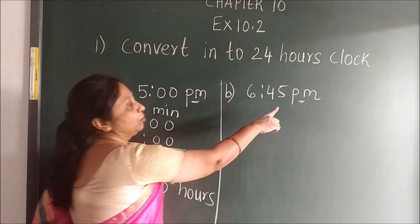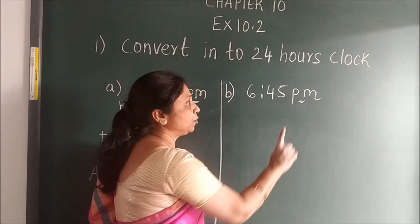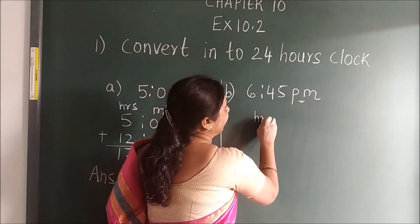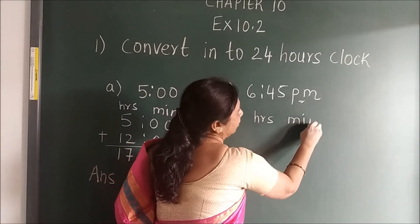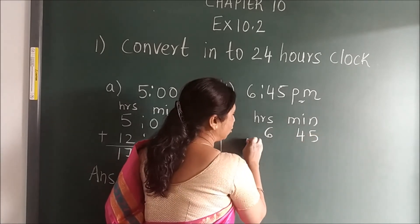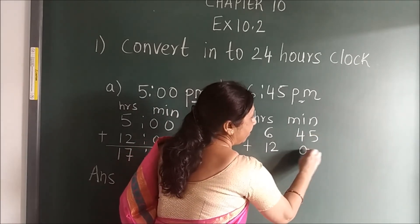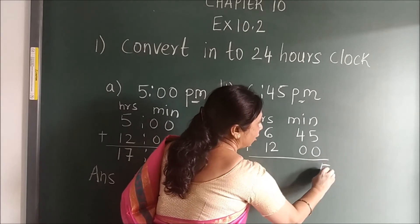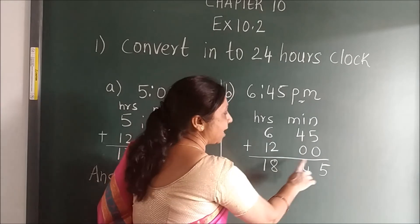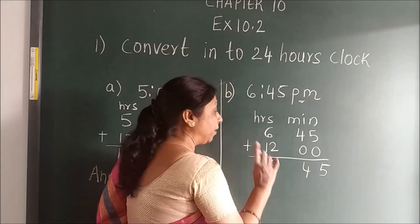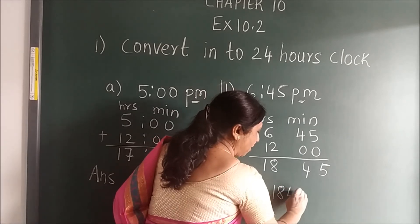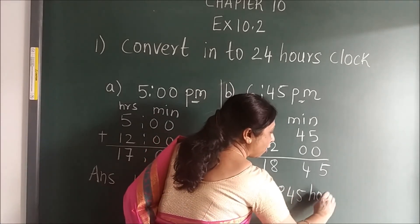Same here — again you see it is PM. First you have to see the unit: PM. Write here hours and minutes: 6 hours, 45 minutes, and add 12. When you add here, you will get the answer: 18 hours and 45 minutes. When you write the answer, you have to write it in the combined form in the form of hours — 1845 hours.